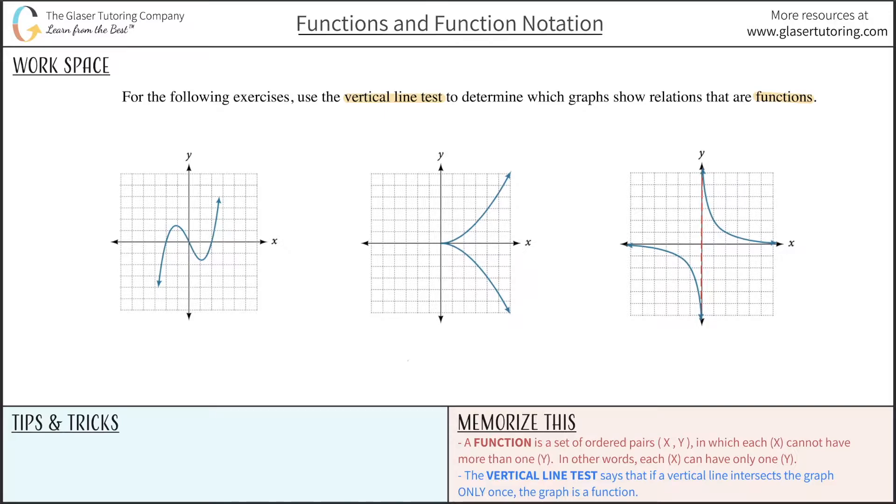What it says is that if we have a certain graph or certain relation as drawn here on the graph on the left in blue, if we were to draw a vertical line anywhere along this graph where this vertical line will only intersect at one particular location on that graph like it does, then this relation here in blue is a function.